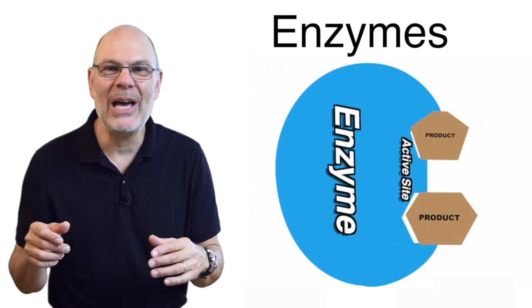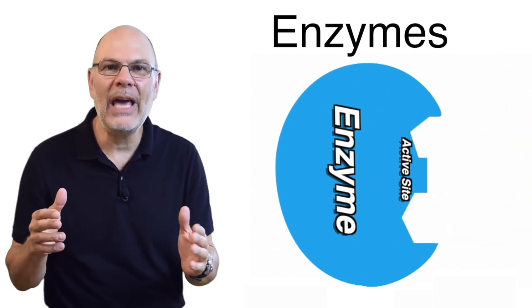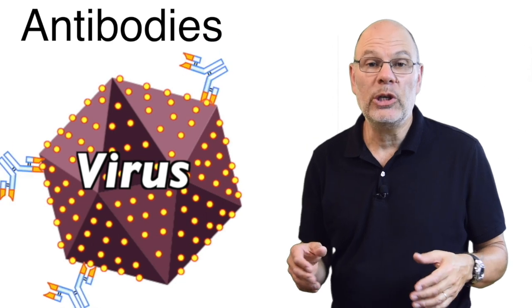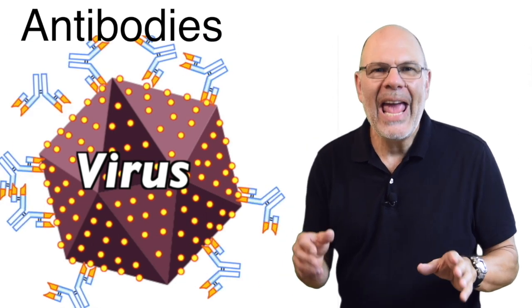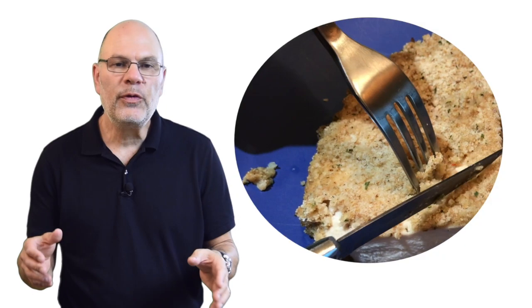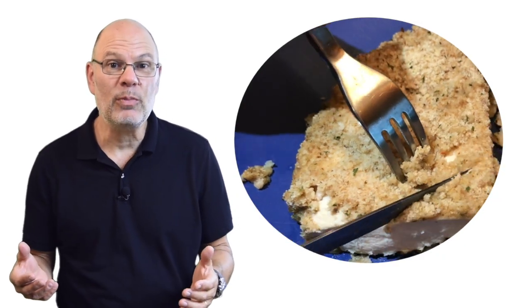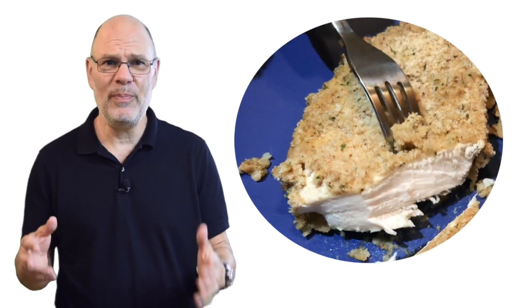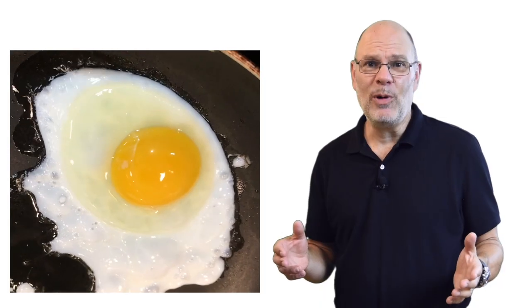Proteins called enzymes catalyze and control chemical reactions in living things. Another group of protein action molecules are the antibodies. Antibodies play a key role in our immune system, fighting off infections. In terms of food, meat is mostly muscle protein. That's when you're eating muscle tissue, when you eat chicken or beef or fish. Egg white is protein.